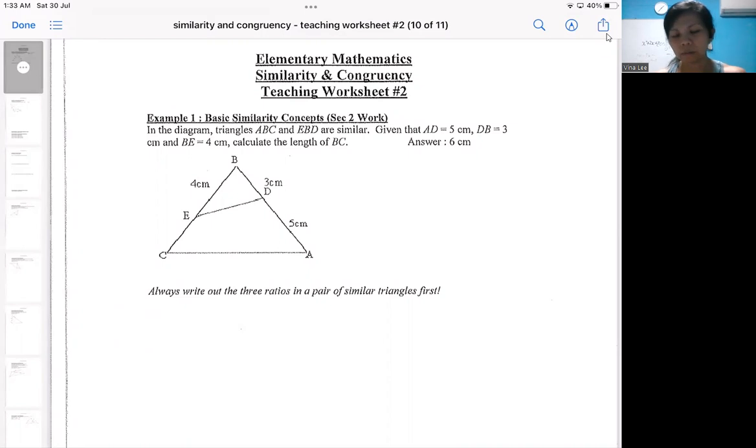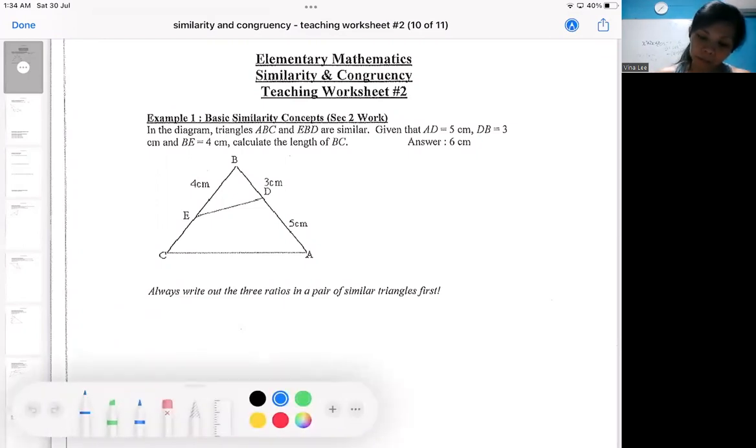So this is an introduction, which is very much a recap of your set two work. During set two work, when you have two similar triangles, try to write out the three ratios first.